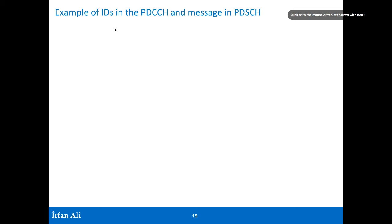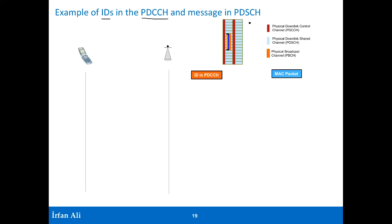We now look at some examples of the IDs we see in the PDCCH — the physical downlink control channel — and the messages in the shared channel. We have a mobile and a base station, and we will recap some of the identities we'll see and what the MAC packet looks like when we look at the process of a mobile creating an RRC connection with the base station.